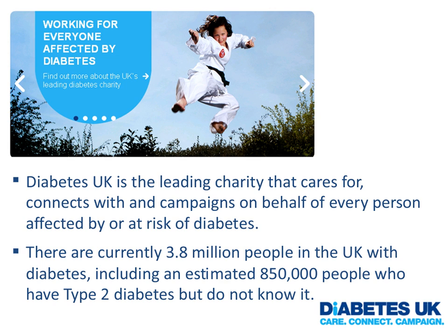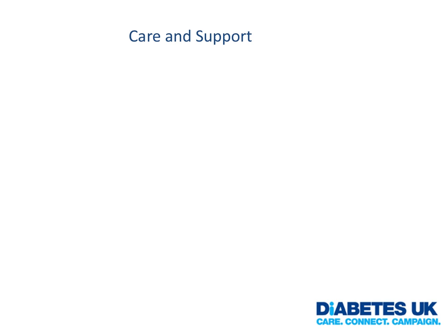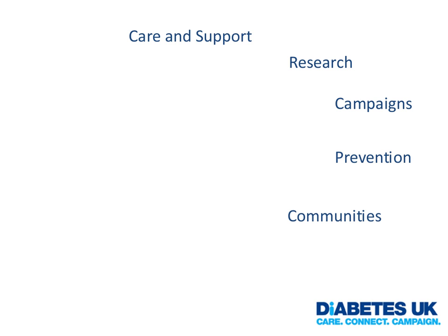Some of the things that we do as a charity: we provide care and support through our care recommendations, publications and care line. We spend around £6 to £7 million a year on research looking at cures for diabetes but also ongoing prevention and management. We run large scale campaigns — at the moment we've got several campaigns running for a four to five year period. We promote prevention of type 2 diabetes, looking at the issues around obesity and the rising tide of type 2. We do community work through our regions, and we have professional membership services for diabetes healthcare professionals including training, conferences and advice. We represent all four nations with Diabetes UK offices in Scotland, Northern Ireland, Wales and England.